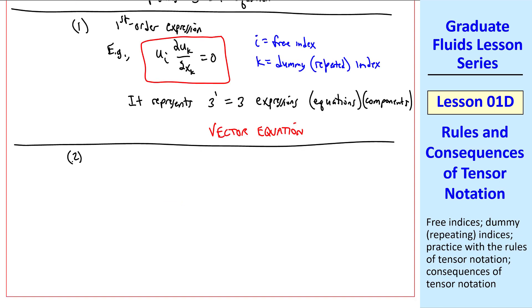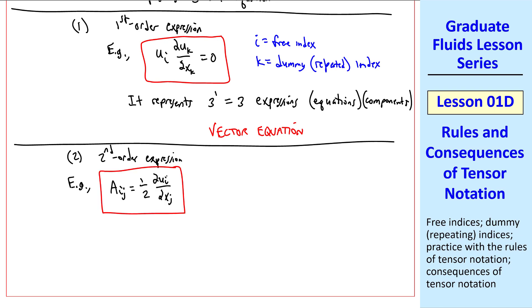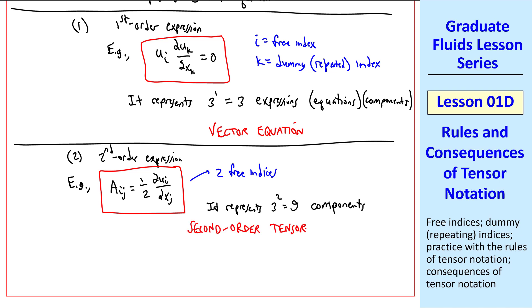When the order or rank is 2, it's a second order expression. I'll use the same example as I used earlier. This expression has two free indices, i and j. It thus represents 3 to the 2, or 9, components. This is thus a second order tensor. And we can continue this for 3rd, 4th, or any order.